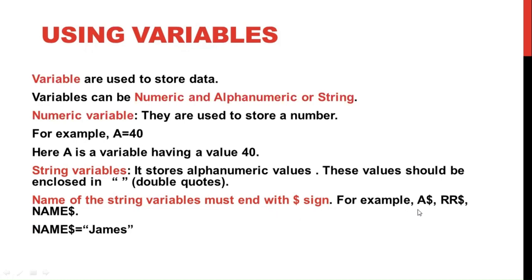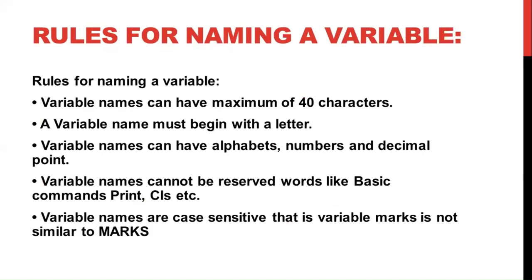For example, a$, rr$, name$ are all string variables. If I write just 'a', that is a numeric variable. So for string variables, the dollar sign follows the variable name. For example, name$ = "James" — the variable name is name$, and since it's a string variable, the value James should be enclosed in double quotes.